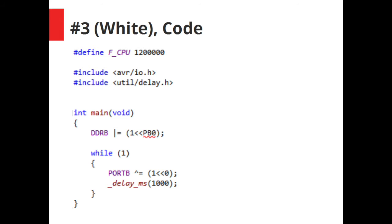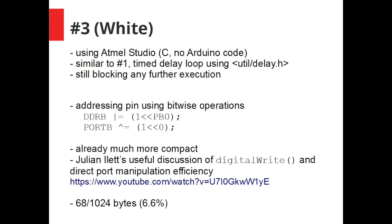One of the differences from the first one is however that it addresses the pins using bitwise operations. And I think as a result of this it makes the compiled code size far more compact down to 68 bytes in fact which is only 6% of the AVR memory.